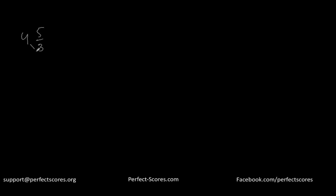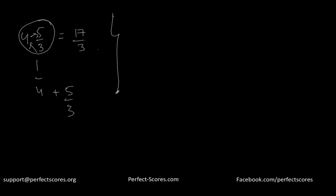Let's revise again. If I have a mixed fraction 4 and 5 by 3, it becomes 4 times 3 = 12, plus 5 = 17, over 3. You can also break it down as 4 plus 5 by 3. That's what we call a mixed fraction. I hope that's clear.